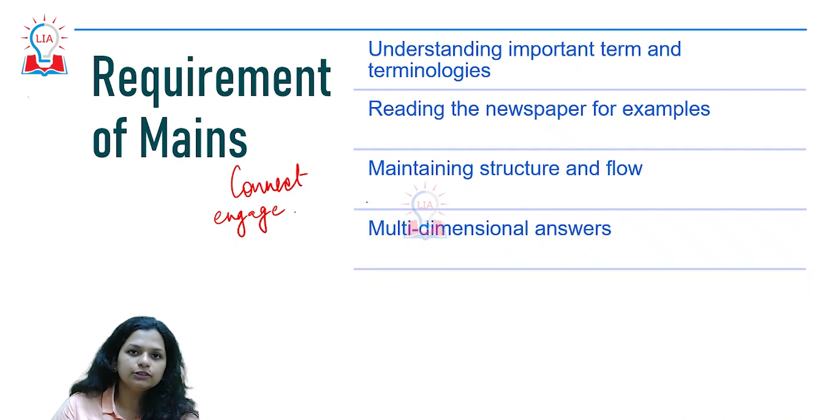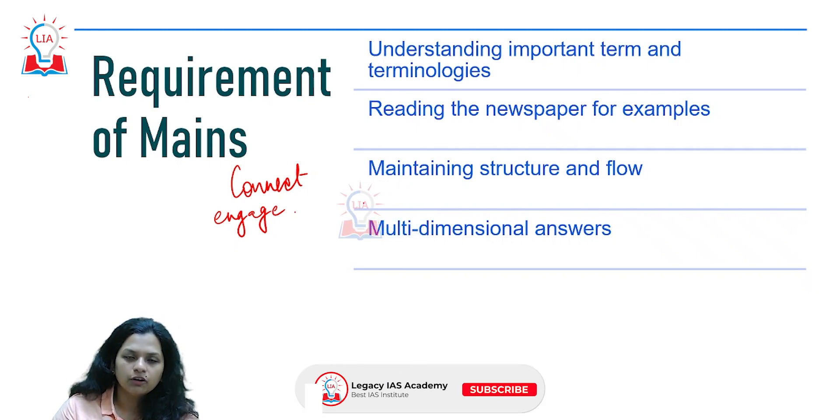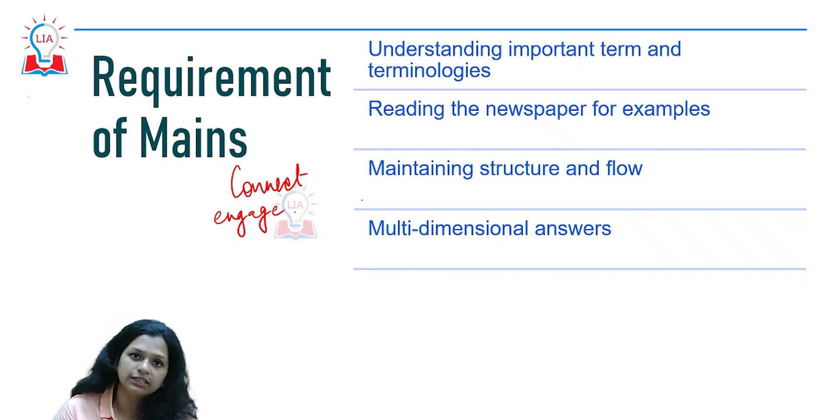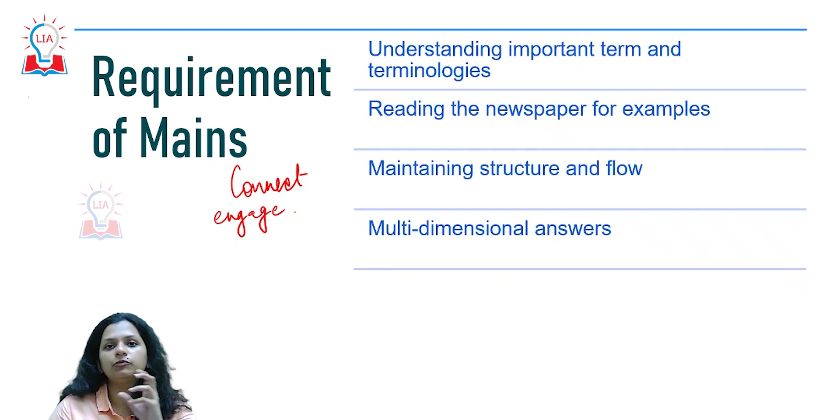In an answer, it's always important to write multiple perspectives. So when you are talking about an issue that is social in nature, try to add an economic angle to it, try to add the laws and constitutional provisions which are already there. Aren't there any environmental concerns in it? So the more number of perspectives you add, the more holistic your answer gets.